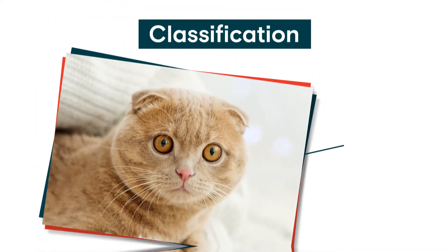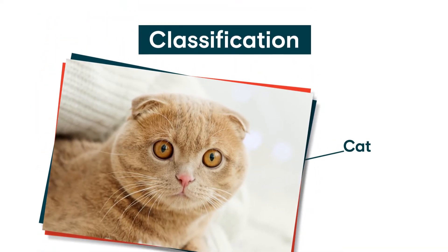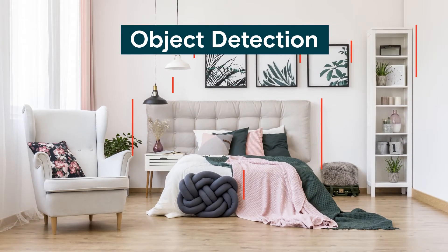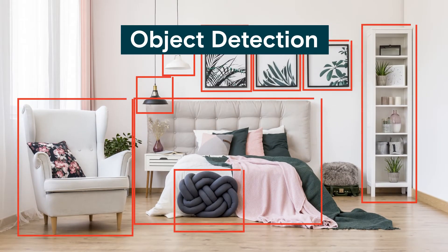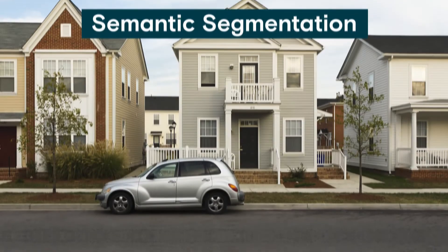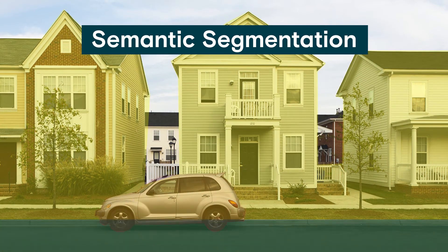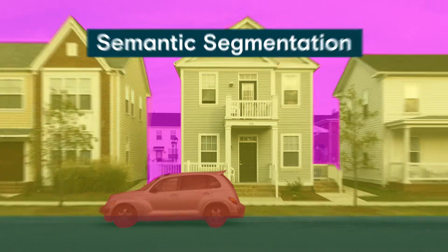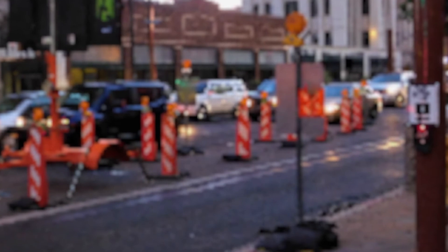There are three main methods for effective image annotation: classification, which applies one label per image; object detection, which identifies target objects; and semantic segmentation, which assigns every pixel to a class.